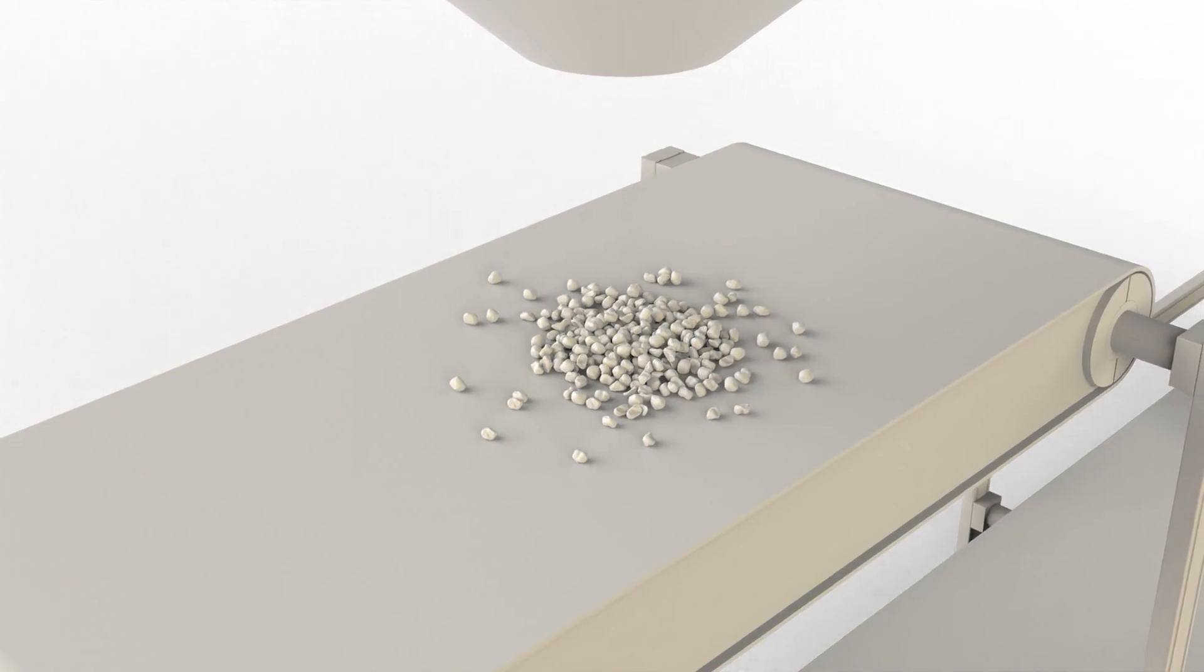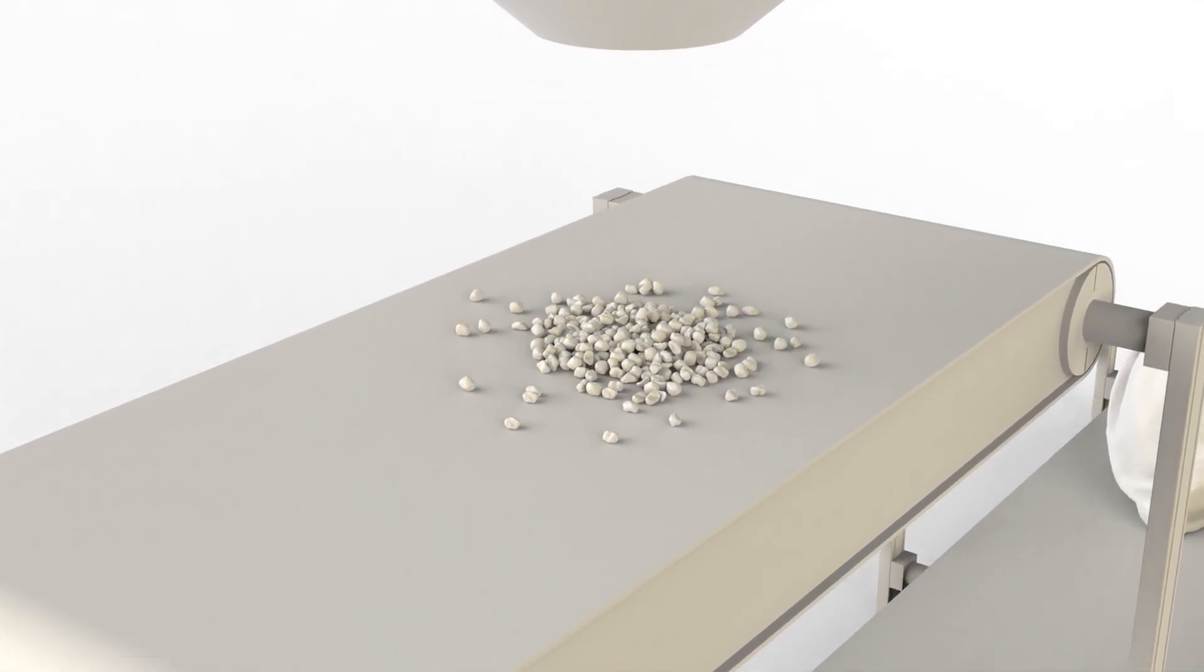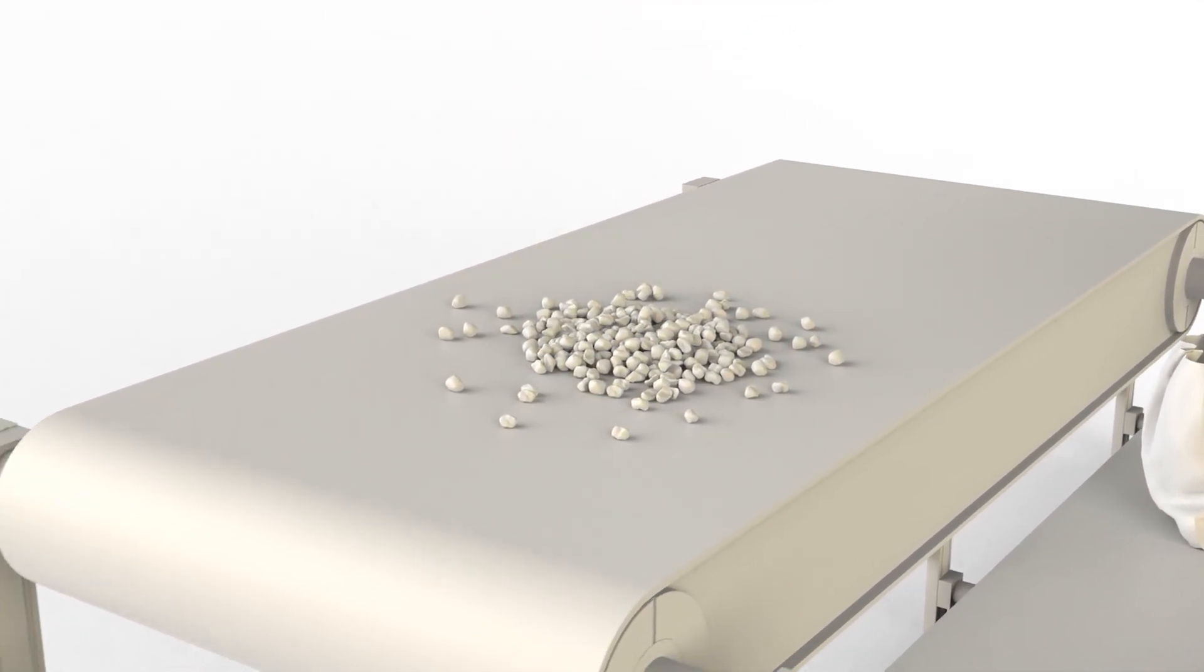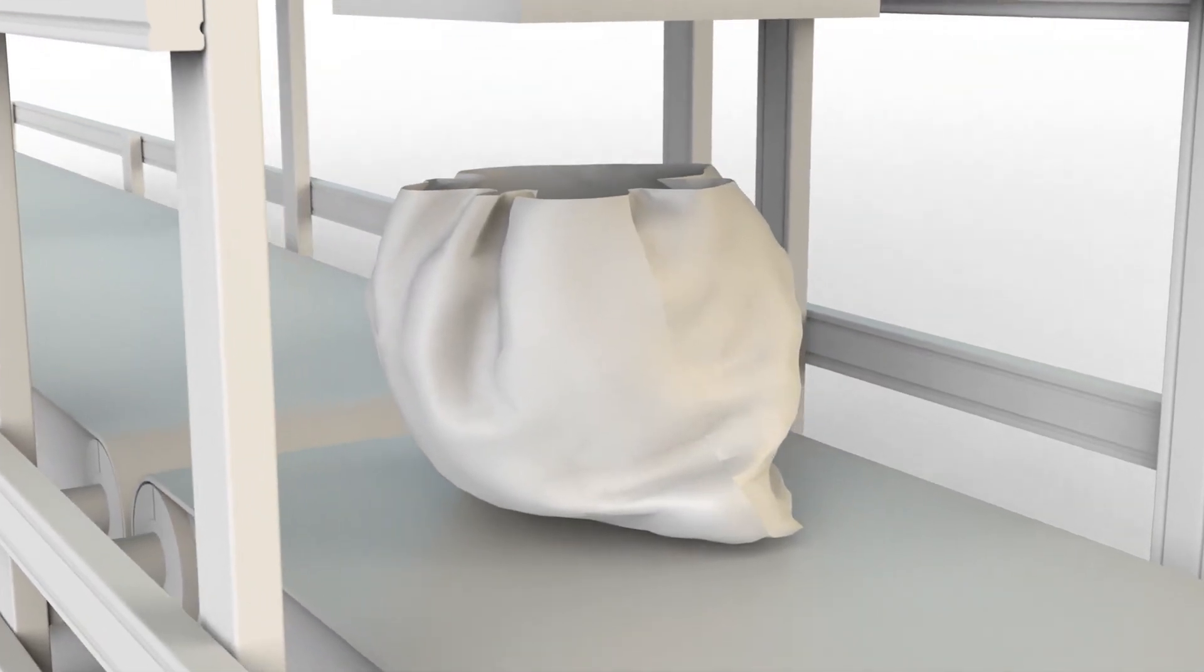When the right weight is met, the hopper stops. The belt brings the salt towards the funnel which makes salt drop into the previously positioned sack.